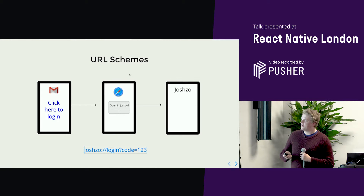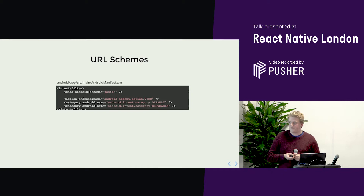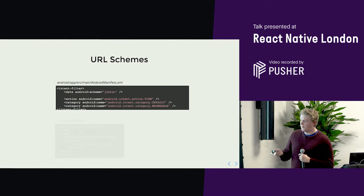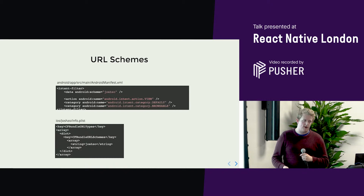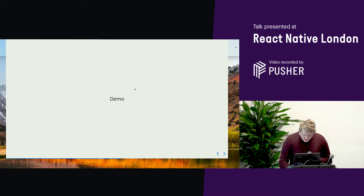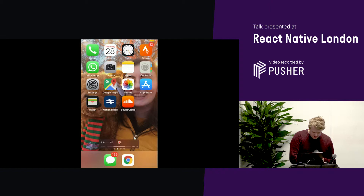To add URL schemes, you have to change things in the Android manifest — you simply add a bit of code. For iOS you add the URL schemes and you can see these in Xcode. Here's a demo: this is URL schemes in action. I see my Joshso one — if I try to click it, nothing happens. But if I click the Facebook Messenger one, I get a prompt to go to Messenger.